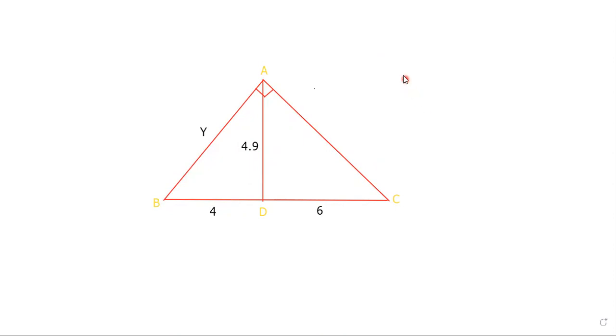Here, the leg rule is the first hypotenuse, which is y, over BD side length, which is 4, equals the second hypotenuse, the bigger one BC, over y. So let me plug in our values.